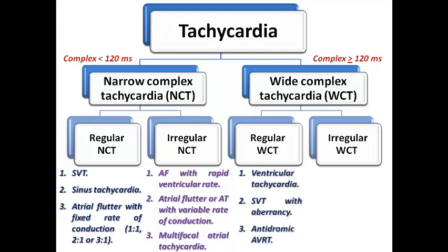For wide complex tachycardia, in the regular form we have ventricular tachycardia — which is regular in most cases but not necessarily always — SVT with aberrancy, and antidromic AVRT. We will have a separate lecture on wide complex tachycardia. For the irregular form, we have pre-excited atrial fibrillation — where AF occurs on top of Wolf-Parkinson-White syndrome — AF with aberrancy, and polymorphic VT.